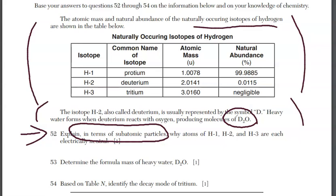Subatomic particles — there are three: protons, neutrons, and electrons. Protons have a positive charge, neutrons have no charge, electrons are negative. Atoms are electrically neutral because the number of protons equals the number of electrons. That's the answer for question 52.